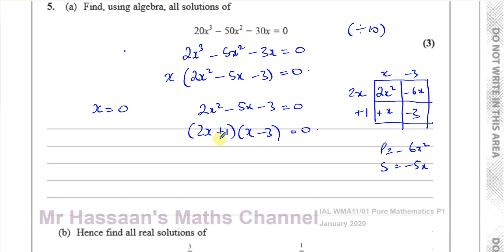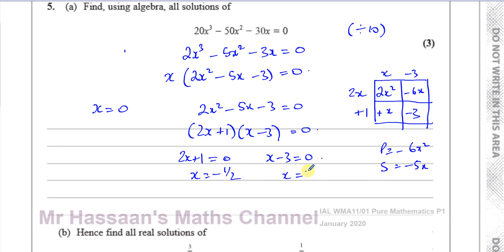So either 2x + 1 = 0, giving x = −1/2, or x − 3 = 0, giving x = 3. Combined with x = 0 from the common factor, we have three solutions: x = 0, x = −1/2, and x = 3.